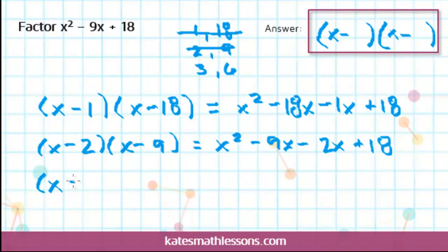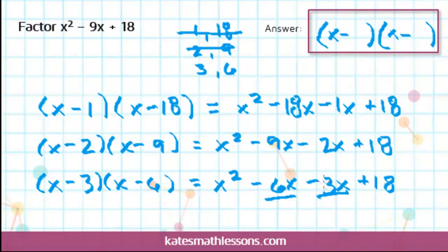So try the last option, the minus 3 and minus 6. If I do FOIL, I get x squared minus 6x minus 3x plus 18. These two middle terms, negative 3 plus negative 6, these combine to negative 9.